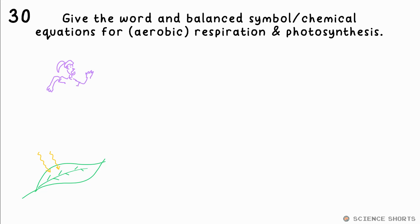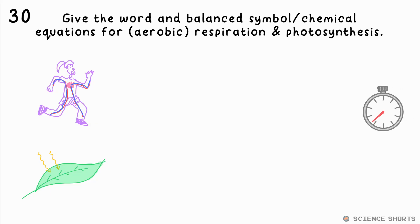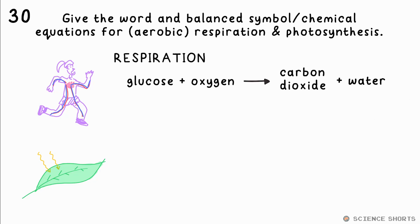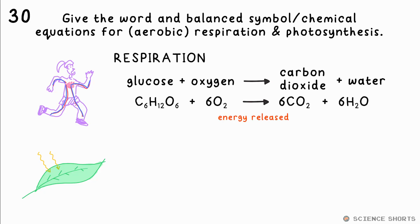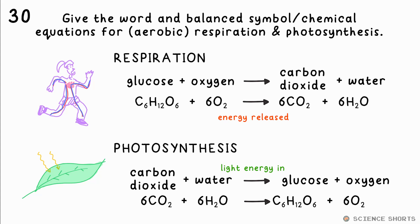Question 30. What are the word and balanced symbol equations for respiration and photosynthesis? Respiration: glucose and oxygen makes carbon dioxide and water, which releases energy. The balanced chemical equation is C6H12O6 + 6O2 → 6CO2 + 6H2O. Photosynthesis is the reverse reaction — energy is required in the form of light.